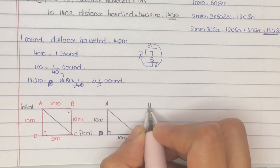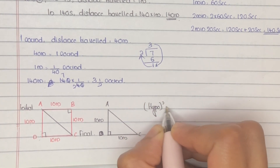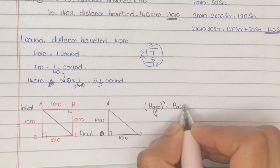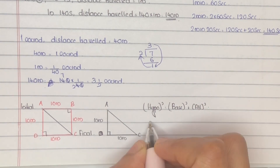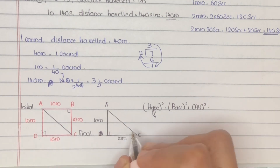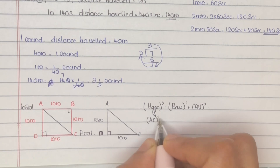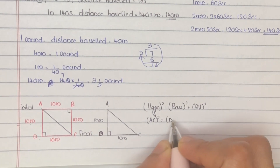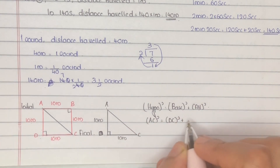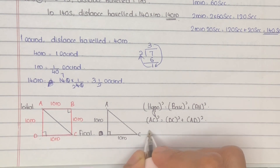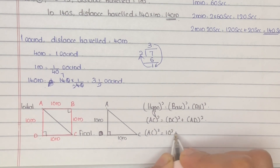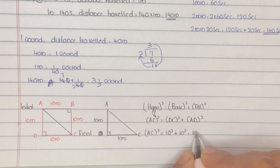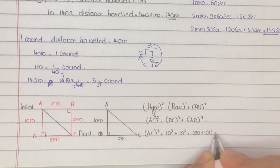By applying the Pythagorean theorem: hypotenuse² = base² + altitude². The hypotenuse is AC (the longest side, opposite the 90-degree angle). So AC² = DC² + AD² = 10² + 10² = 100 + 100 = 200.